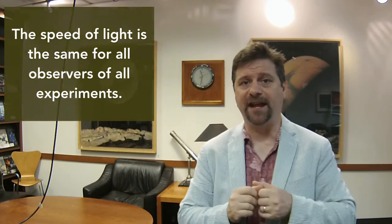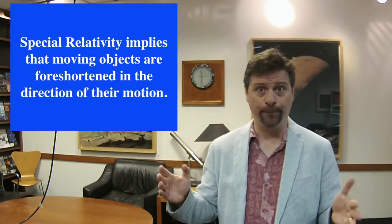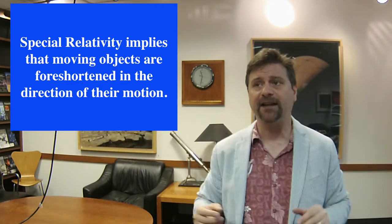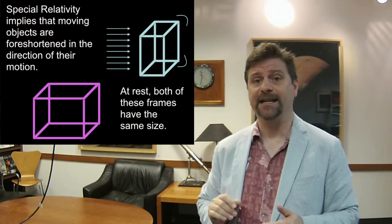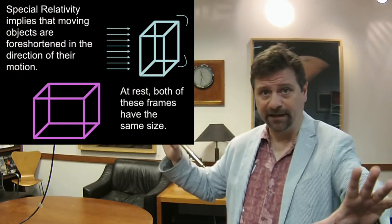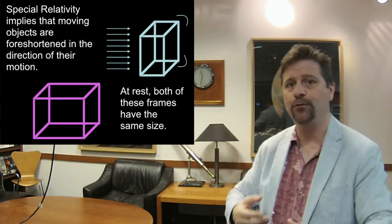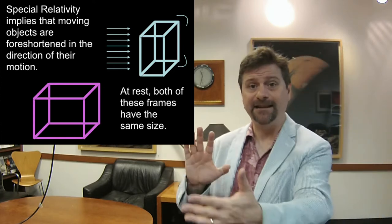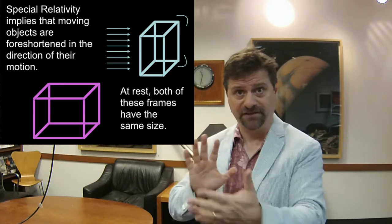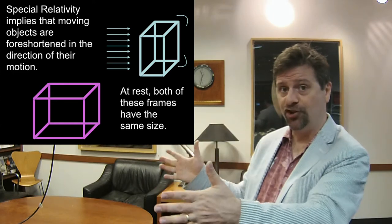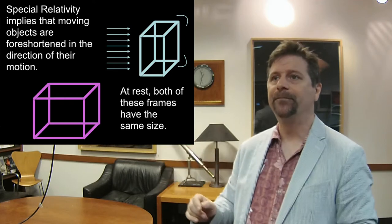Our third effect is that the length of the room rushing by appears shorter. Going back to the room filled with clocks rushing by us — I jump outside and watch the room. I see the room must compress in the direction of motion. Why? Because everyone has to be able to predict each other's measurements.